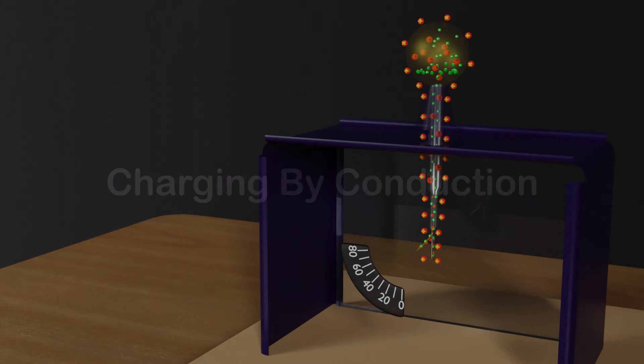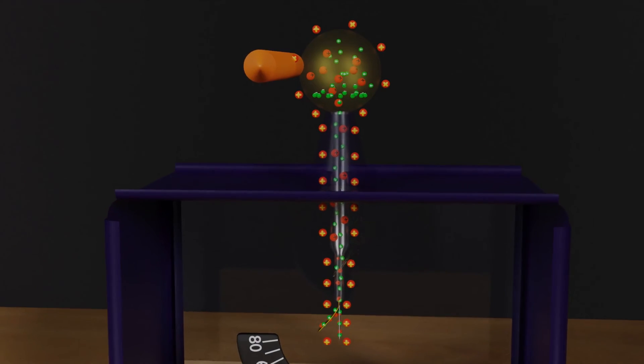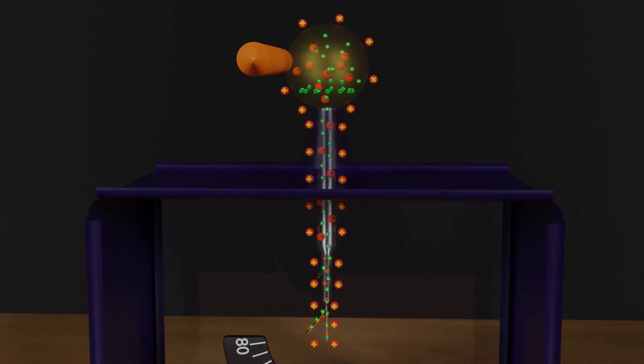Now that our electroscope has positive charge, when we touch an unknown charged object to the conducting sphere, the gold leaf deflects back or returns to its original position.